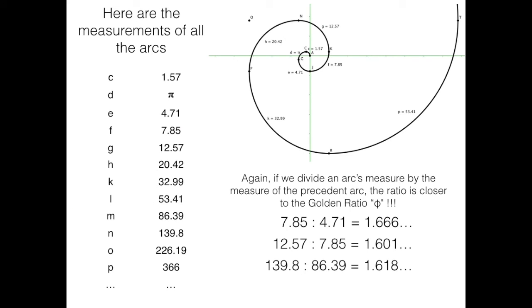Here are the measurements of all the arcs. If we divide an arc's measure by the measure of the president's arc, the ratio is closer to the golden ratio, phi.